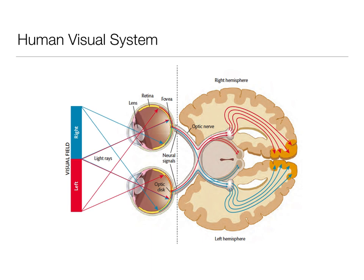Information in the left of your visual field goes to the right side of your brain, and information in the right visual field goes to the left side of your brain. This is why split brain patients can compensate very well — they're still getting information from both eyes, receiving both left and right visual field information in each eye. Even with the corpus callosum severed, they still get information from both the left and right visual field.